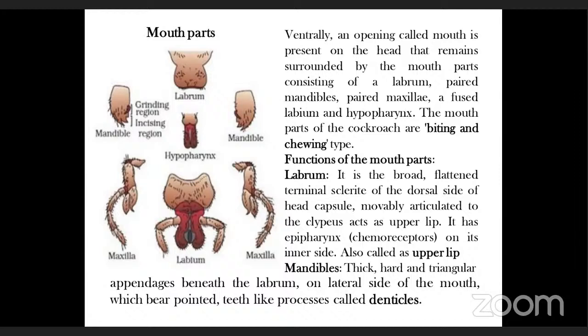Mandibles are thick, hard, triangular appendages present beneath the labrum on the lateral sides of the mouth. They bear pointed tooth-like processes called denticles on the inner side and are operated by adductor and abductor muscles. The cutting of food takes place due to these mandibles.